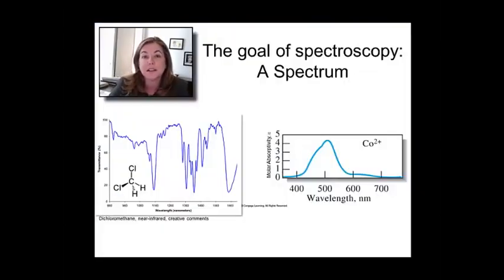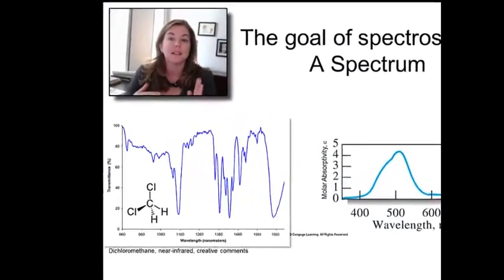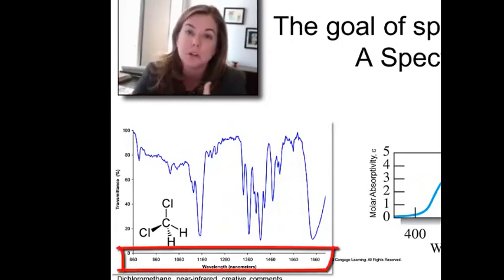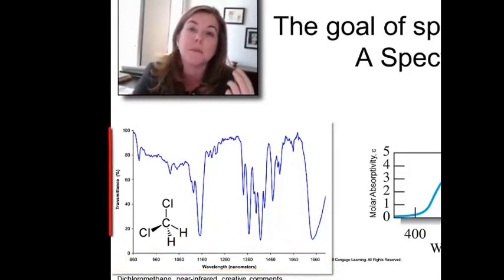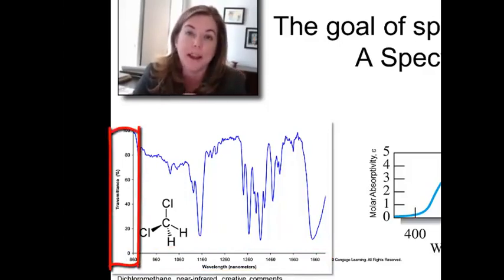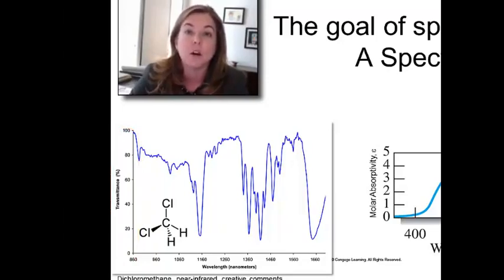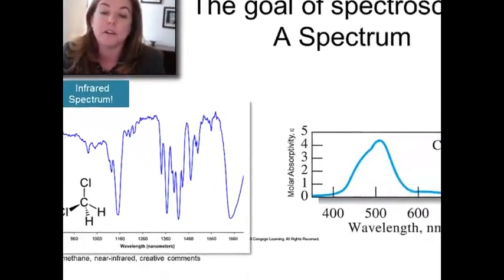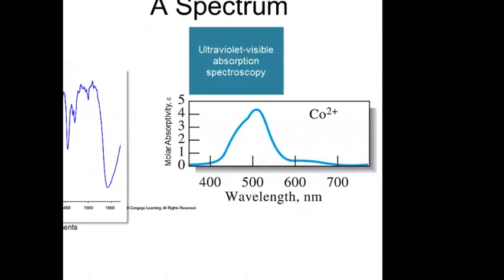So the goal of any spectroscopy is to form or create a spectrum. And what a spectrum means, scientifically in this sense, is a graph which shows on the x-axis wavelength. And that's wavelength of light. So that's going to be the photons that are going to interact with your sample. And then the y-axis is going to be some measure of how much light was taken away from the beam, if it's an absorption spectroscopy. And in this case, over here, you see an infrared spectrum. And you can see that the x-axis in this case is actually infrared light. And on the right over here, you see an optical spectrum of cobalt.